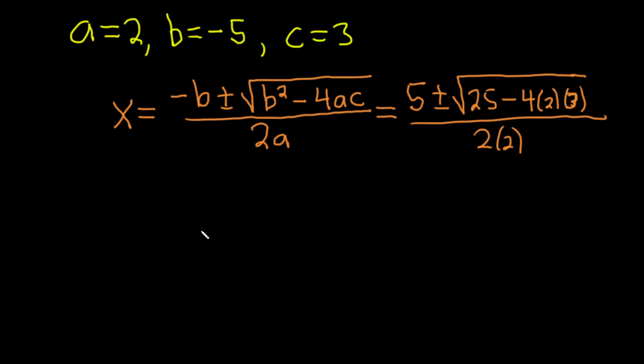So if we keep going here, we get x = 5 ± √(25 - 8×3). Right, 4 times 2 is 8, so we get 8 times 3, which is 24. So we get 25 - 24, which is 1, over 2 times 2, which is 4. So this is (5 ± 1) / 4.